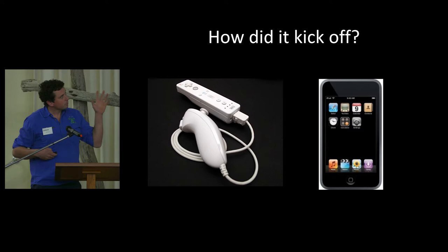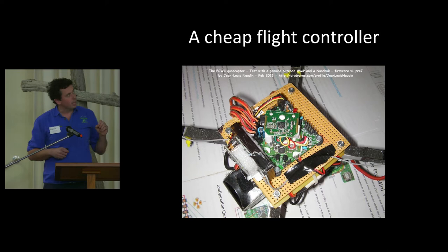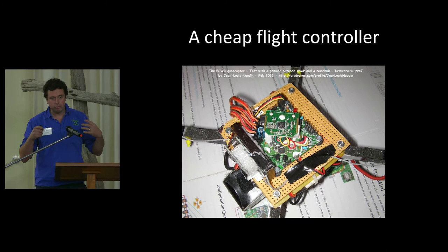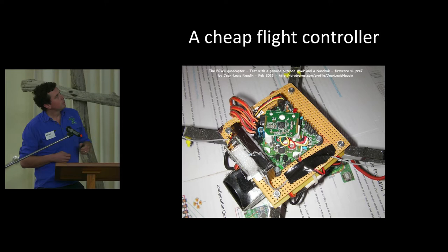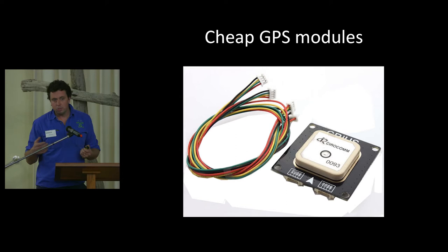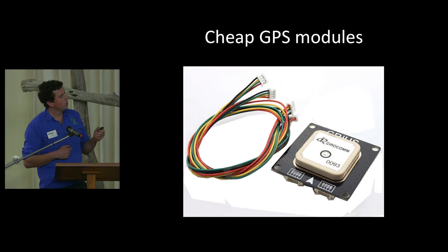The nunchuck had a really nice little chipset in it with a mini computer and accelerometers with ports that you could make it do things. I ruined my first one by pulling it apart. This board here is from the bottom of the nunchuck and that's all the accelerometers. Then you ended up with all these cheap GPS modules — instead of spending hundreds of dollars on them, you could buy something for about 70 or 80 bucks and plug it into that Wii board and get some control. Suddenly things were getting cheaper.